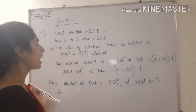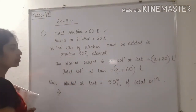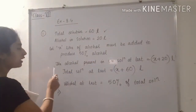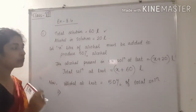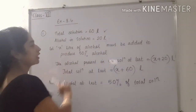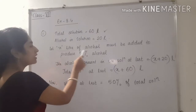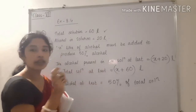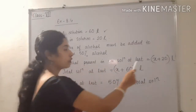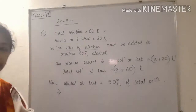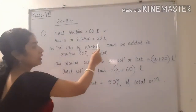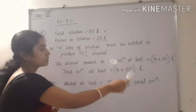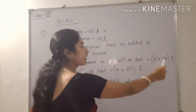So x litres of alcohol must be added so that we get 50% alcohol. The alcohol present in the solution at last will be x plus 20, because we add x to the previous 20 litres. Similarly, the total solution will also increase — it was 60 litres, so now it becomes x plus 60.